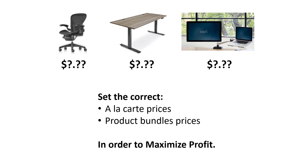At this point, we don't know what the optimal a la carte price is for each one of the options, and we'd like to figure out how to best set the bundle price for any two products or all three products. In this scenario, we've already conducted some survey research from a group of our target market, and we've established how much they value each individual product. Using just that information and a little bit of information about the variable cost associated with selling each product, we're going to figure out exactly how we should set these prices.